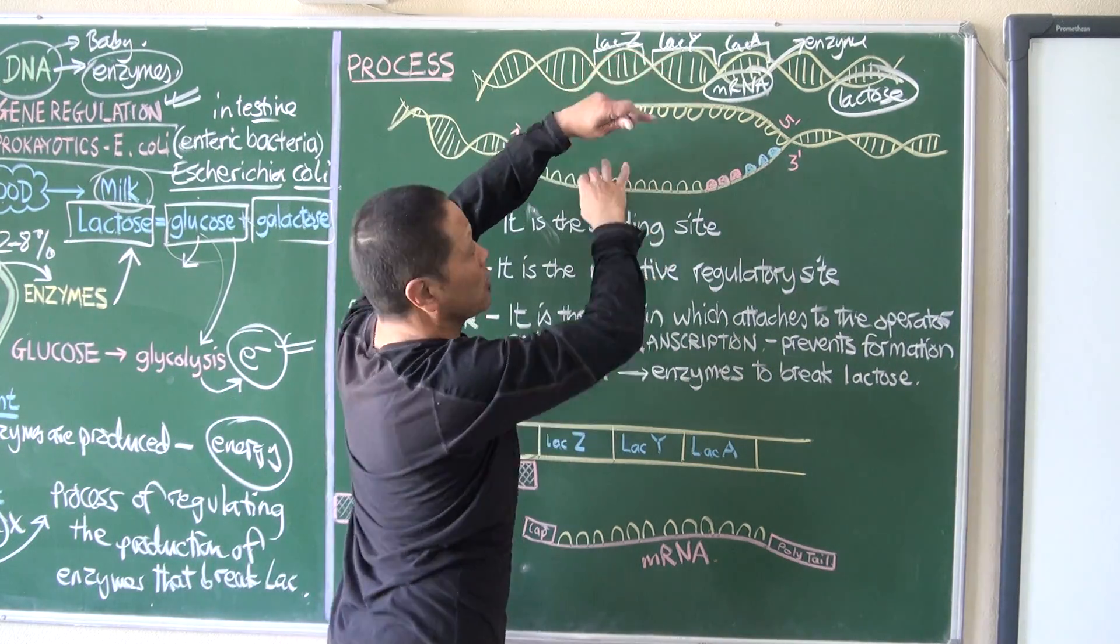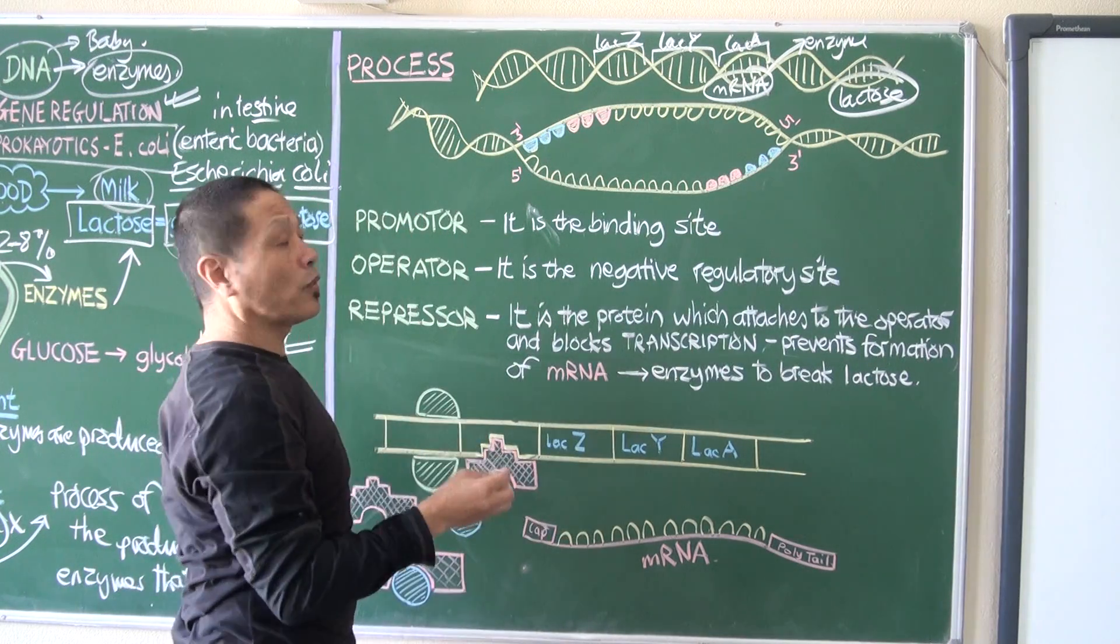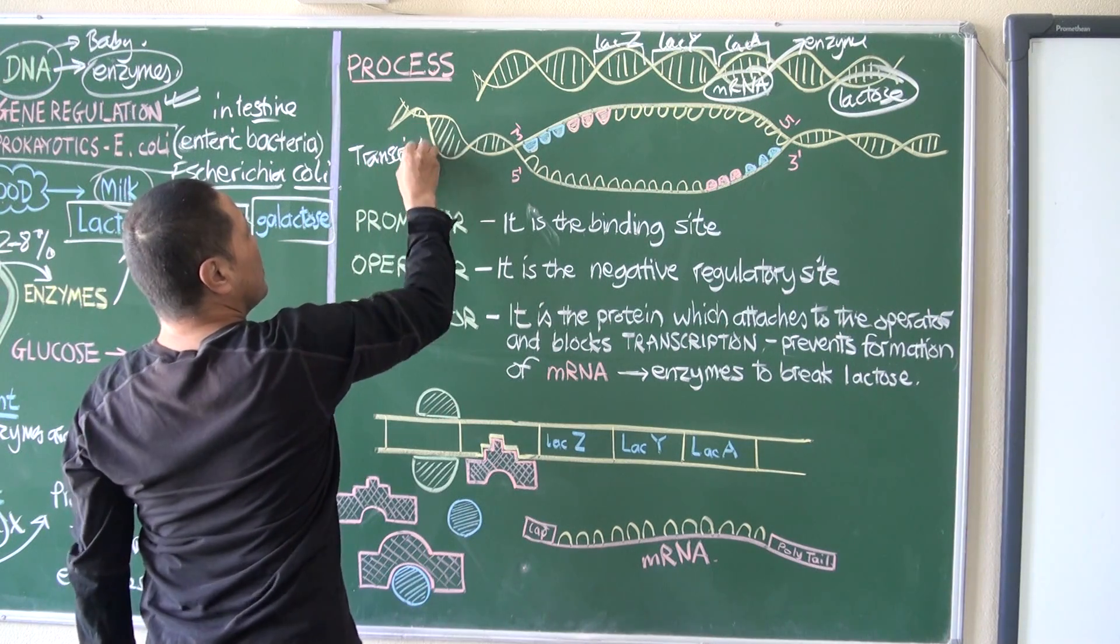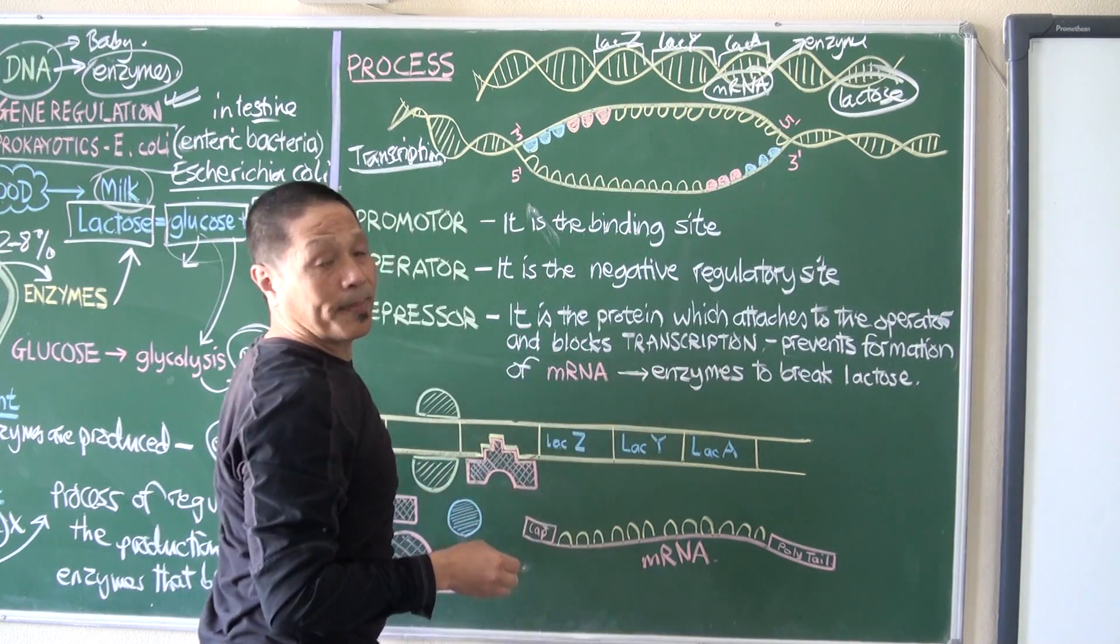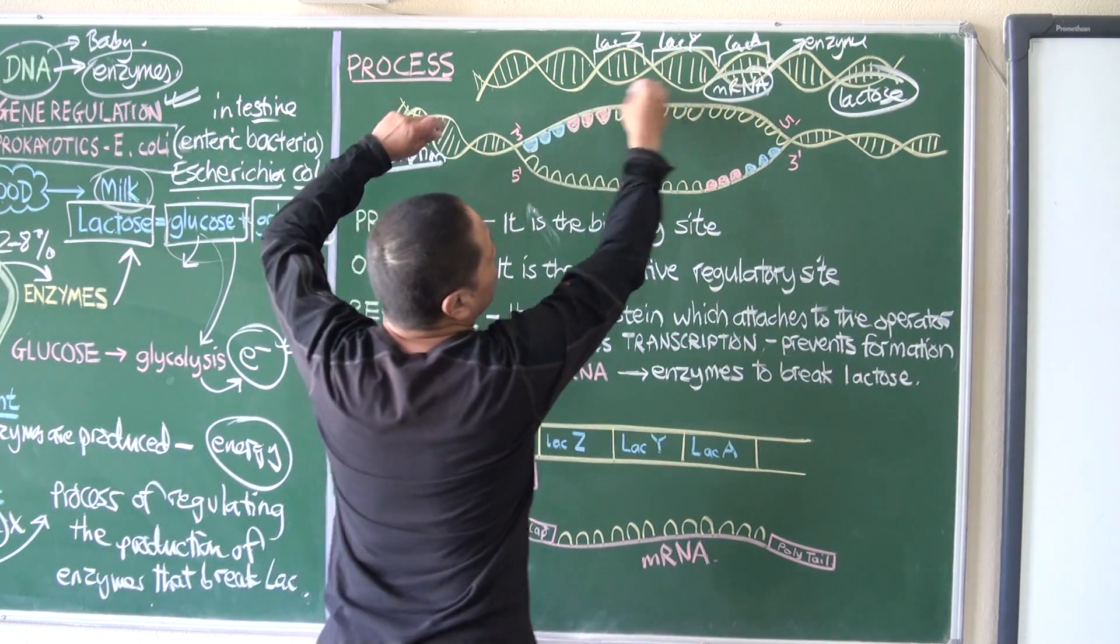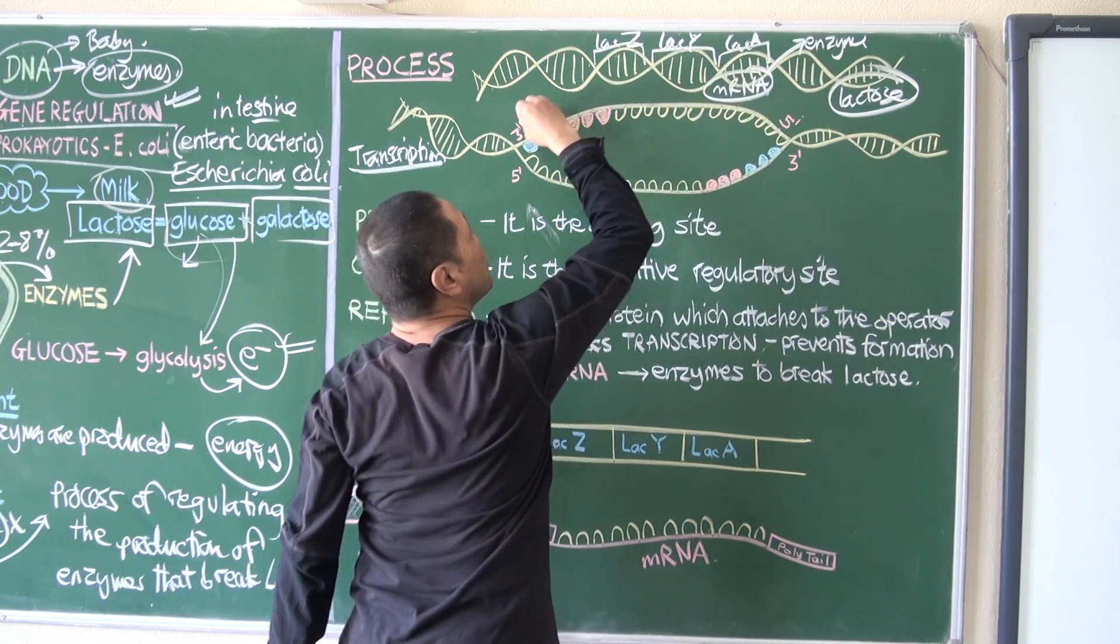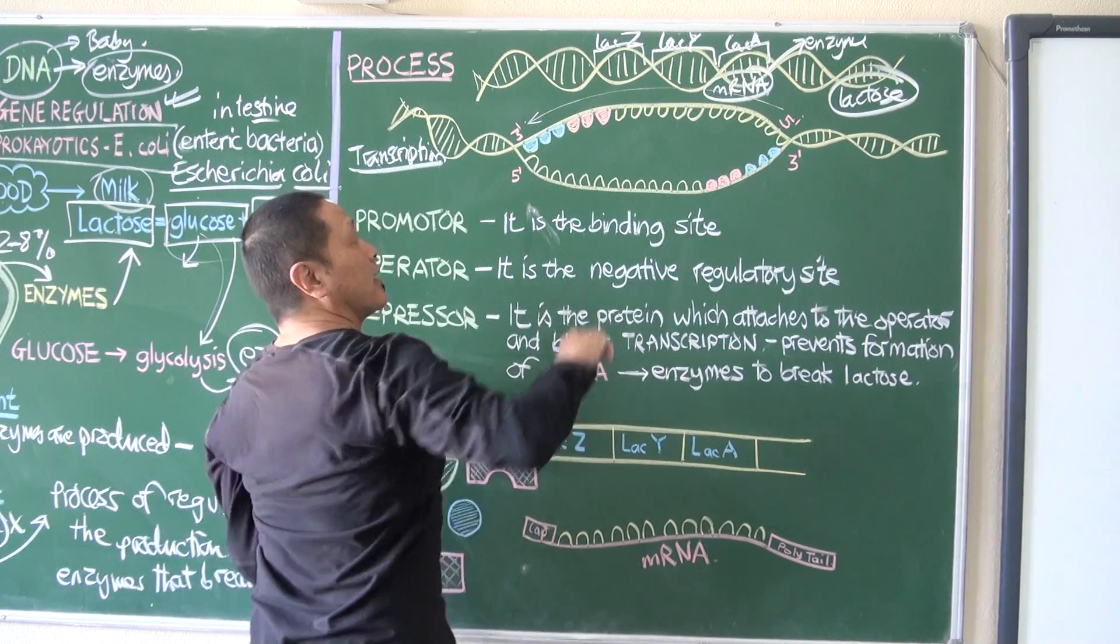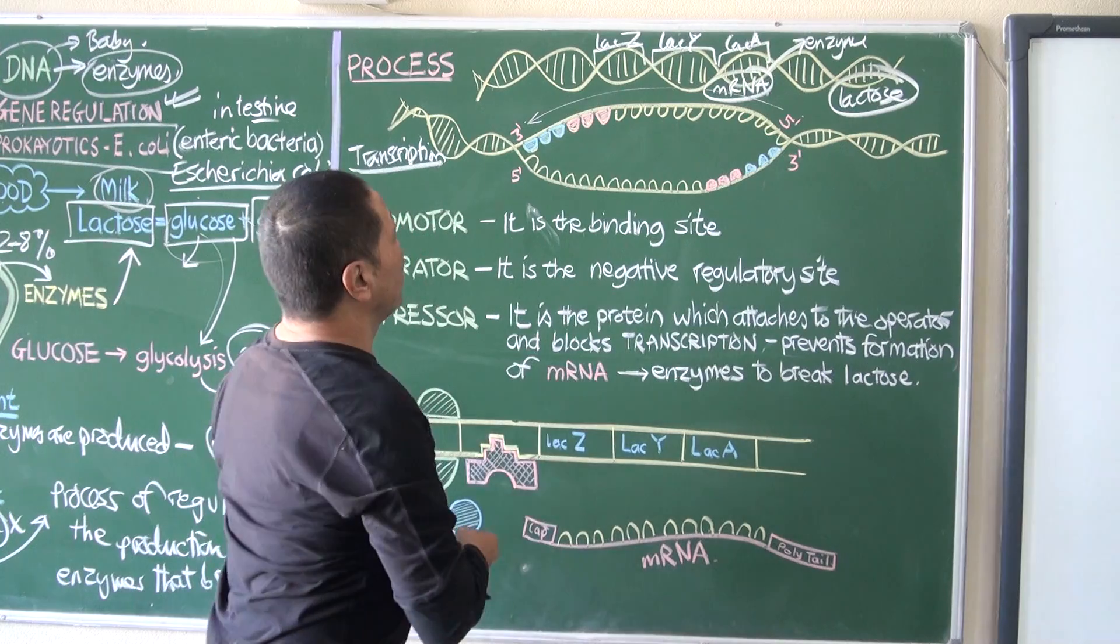Only one strand is copied, and in this case it's the upper strand which runs from five prime end to three prime end in this direction, so that it can copy the codes this way at a stretch.